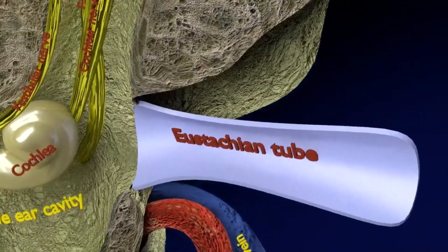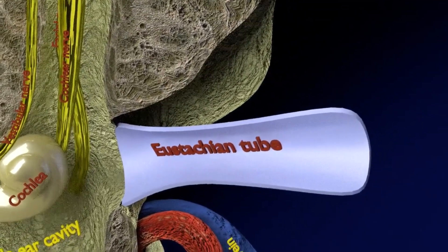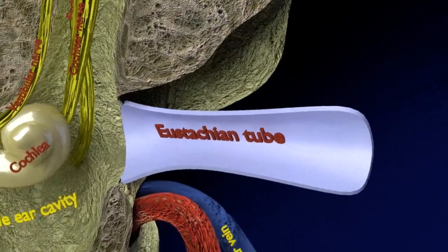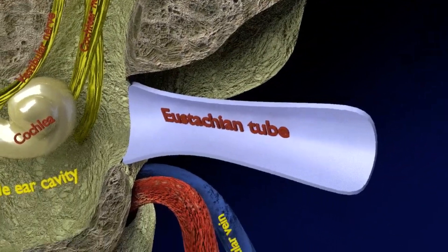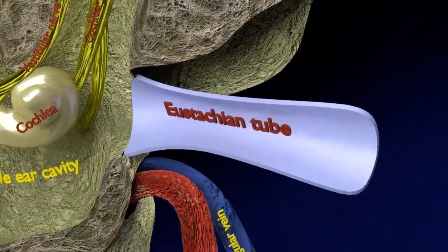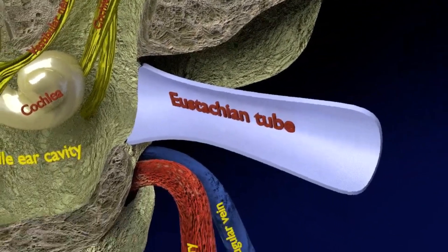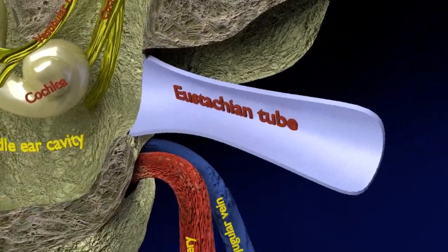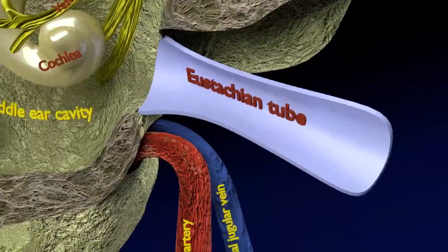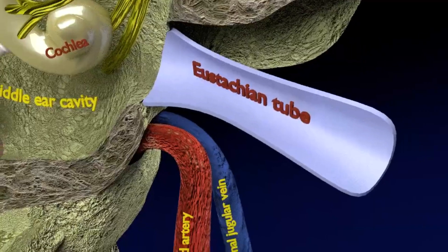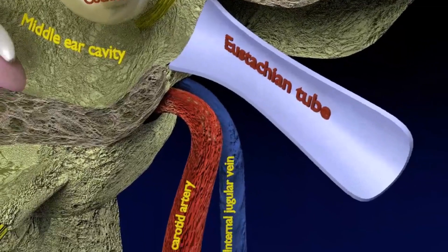The auditory or the eustachian tube is a narrow tube of approximately 3.5 cm in length. It connects the ear to the outer part of the nose and acts as an equalizing valve. This ensures that the pressure on either side of the drum is balanced and that sound can be heard correctly.